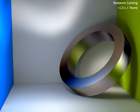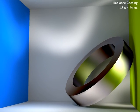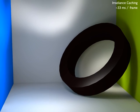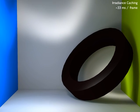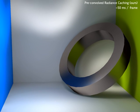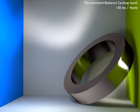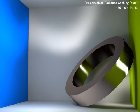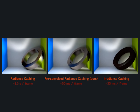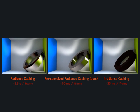A scene with caustic rendering using radiance caching, using irradiance caching, and our approach. Note how radiance caching produces negative and overshot light, and how specular bounces are missing in irradiance caching.